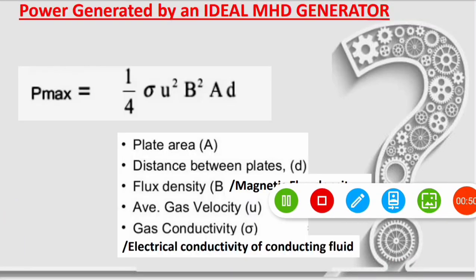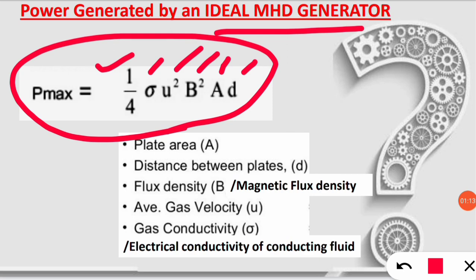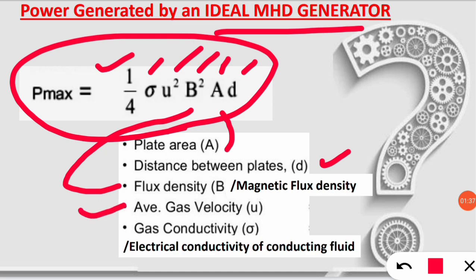To solve this type of question, you have to remember only one formula. The power generated by an ideal MHD generator is given by: P = (1/4) × σ × U² × B² × A × d. Here, A is the plate area, d is the distance between the two plates, B is the magnetic flux density, U is the average gas velocity, and σ is the electrical conductivity of the conducting fluid.